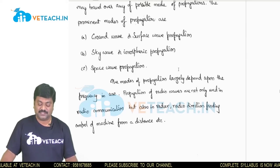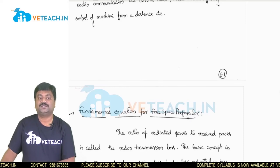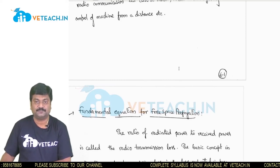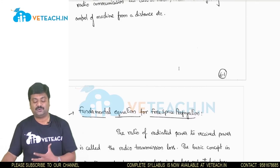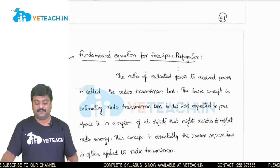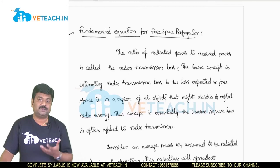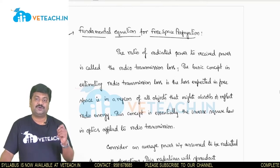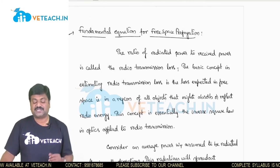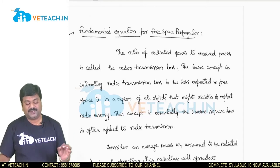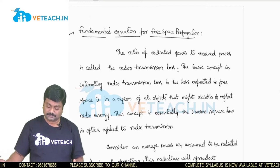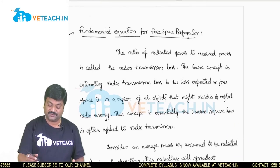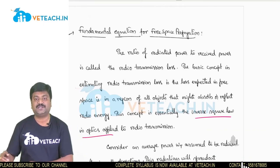The modes of propagation depend upon the frequency and are well utilized in all communication purposes. Before propagating, we need to define free space propagation. To define it, we first need to know the fundamental equation of free space propagation. This fundamental equation is defined on the basis of loss itself — the radio transmission loss — which is the ratio of the power received to the power transmitted. This is essentially the inverse square law in optics.